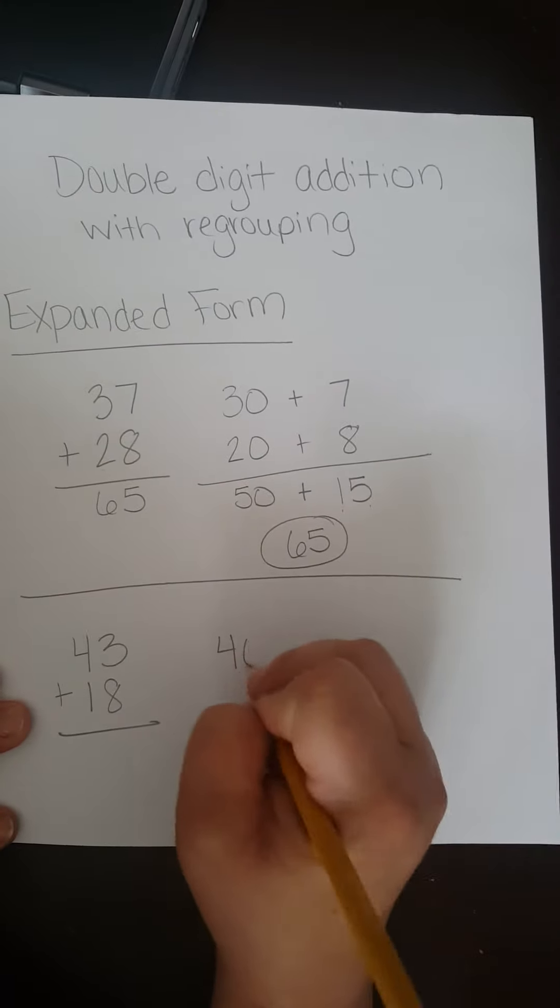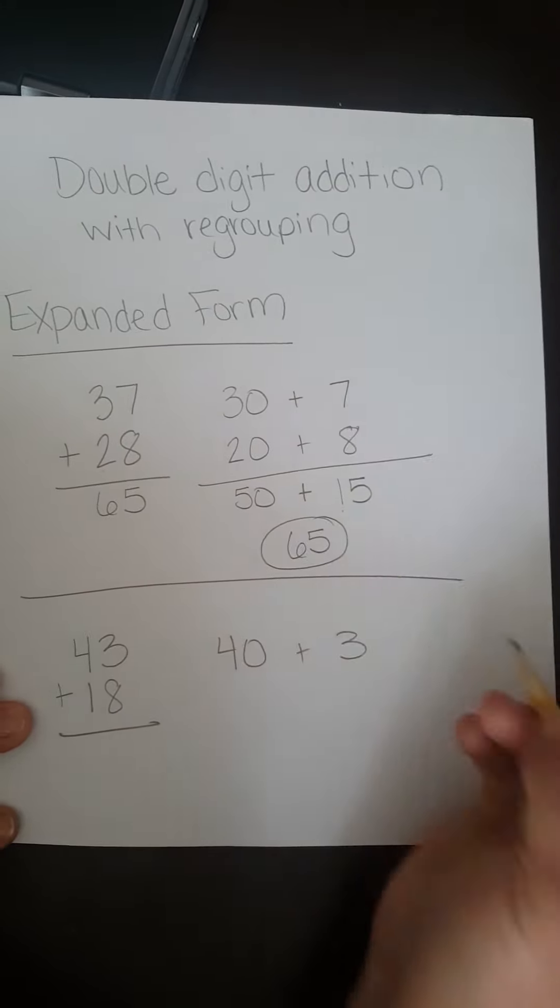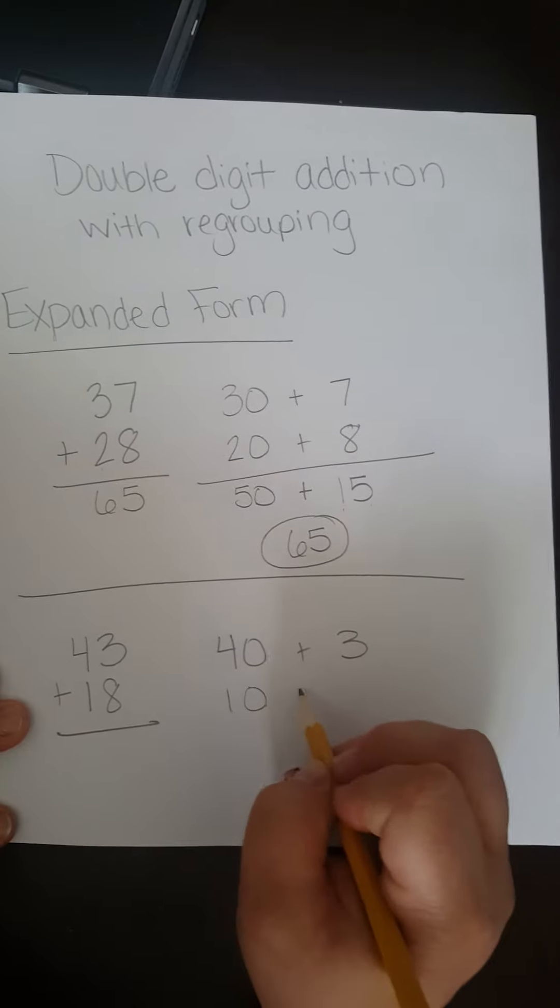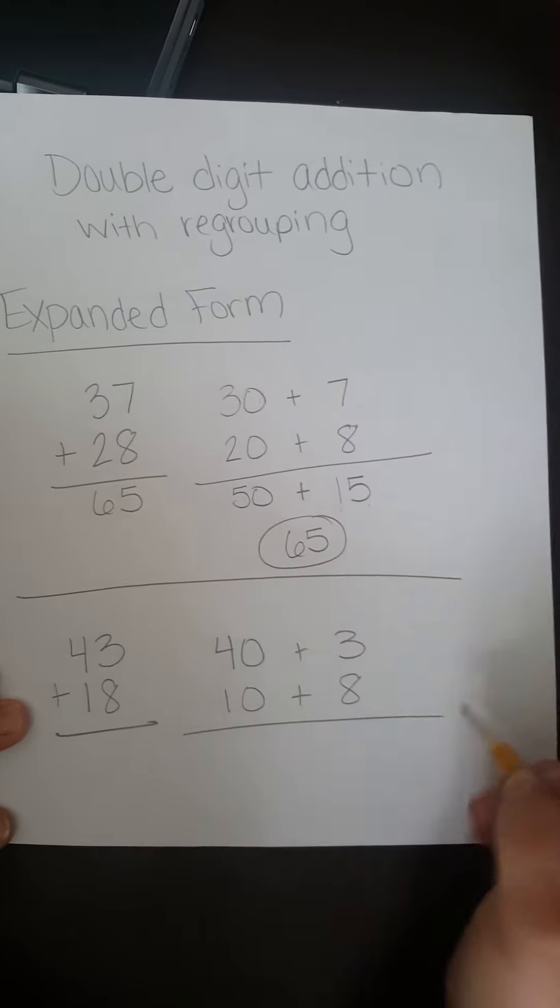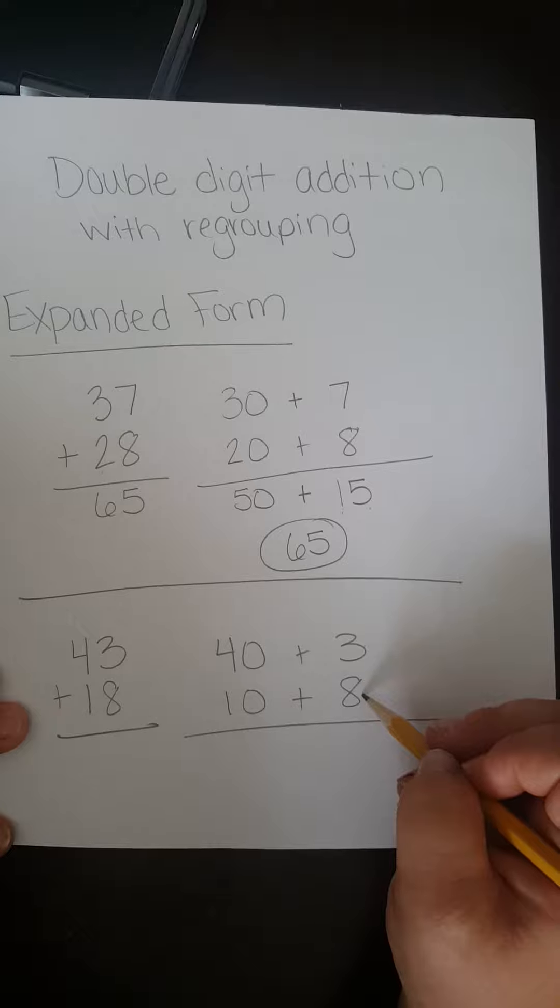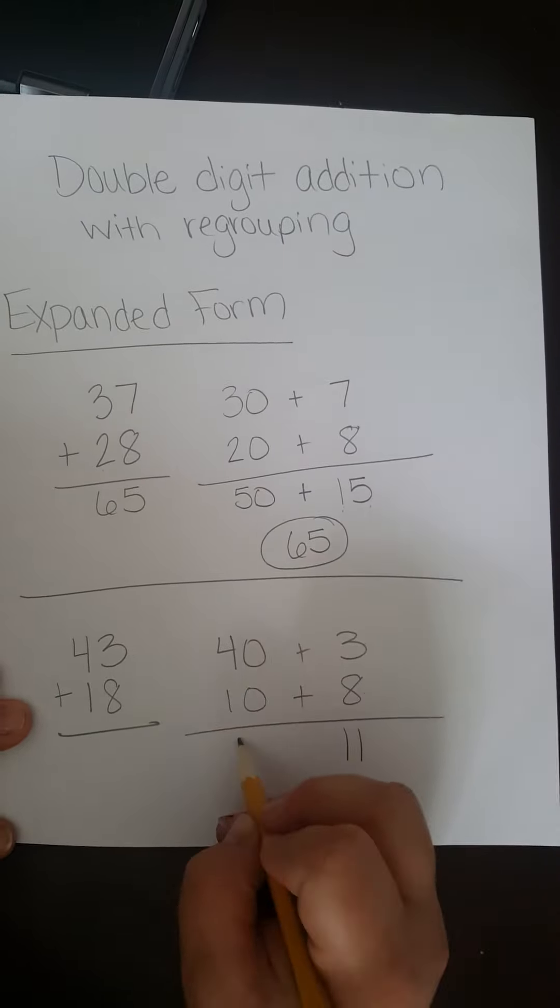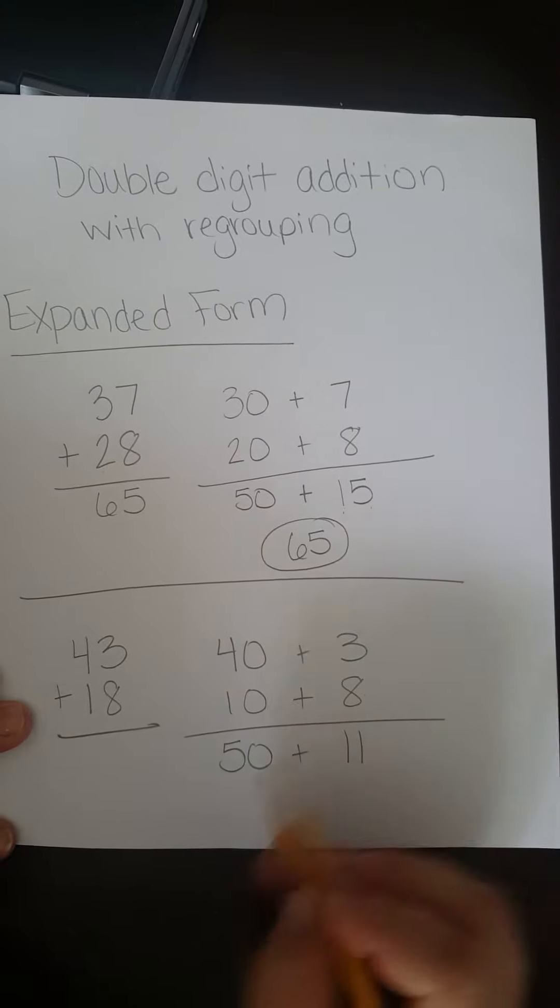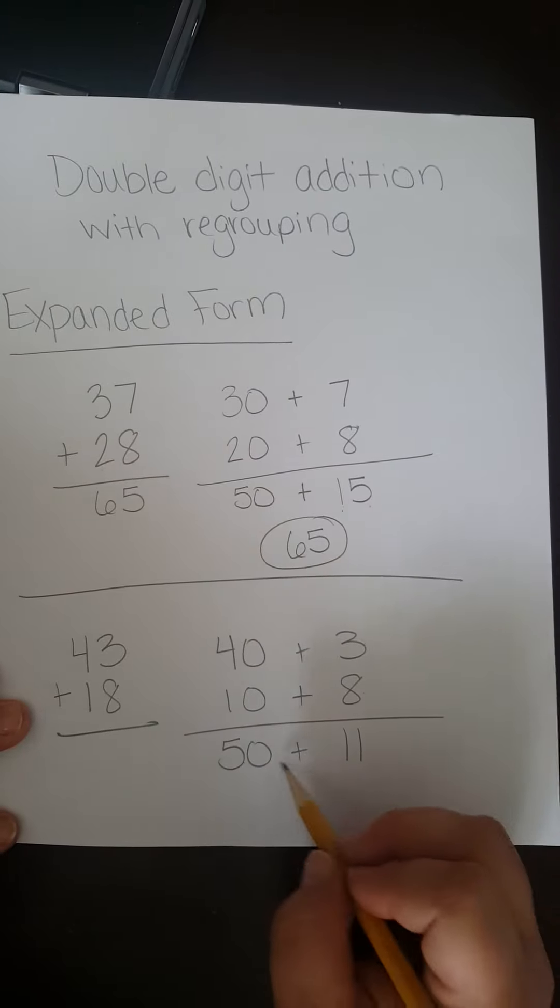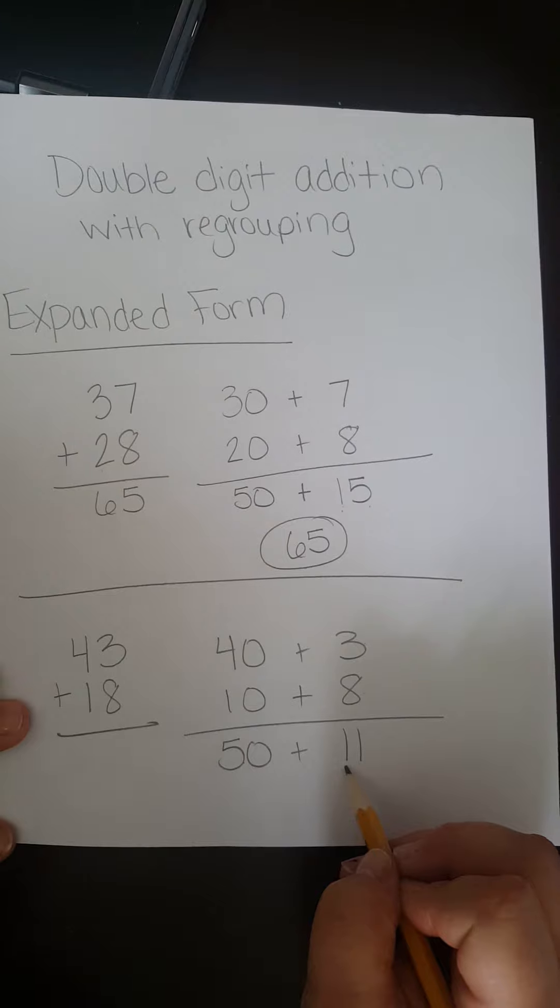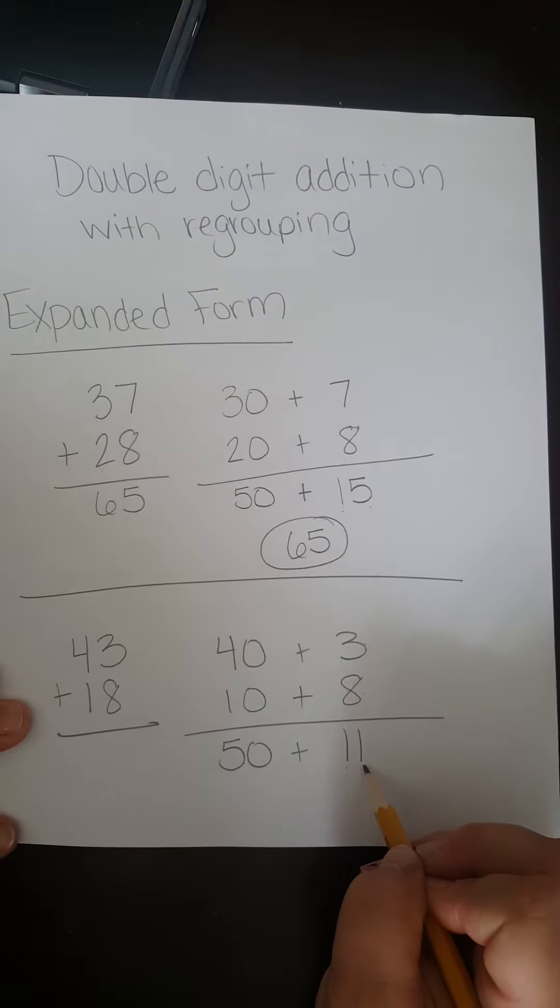So we have 40 plus 3, 10 plus 8. 3 plus 8 is 11. 40 plus 10 is 50. 50 plus 11, or 50 plus 10 is 60, plus one more is 61.